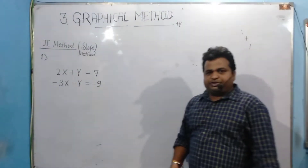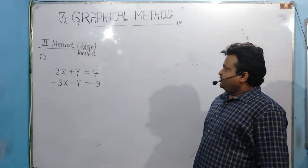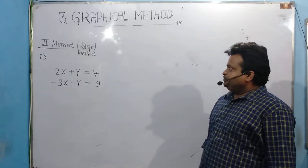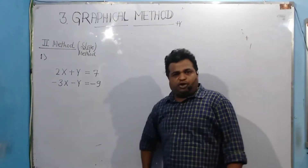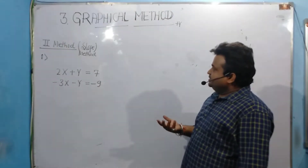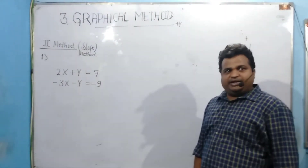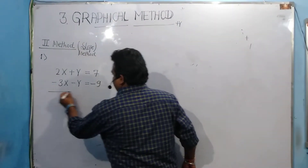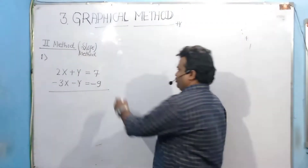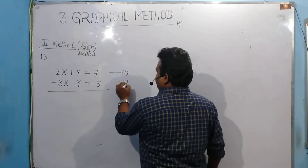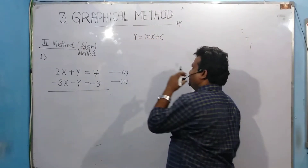Now the second question — this is for the graphical method, the second approach: the slope method. How to solve the same problem by slope method to get a better understanding. In this method, my first step is to convert equation number one and equation number two into the form y = mx + c.